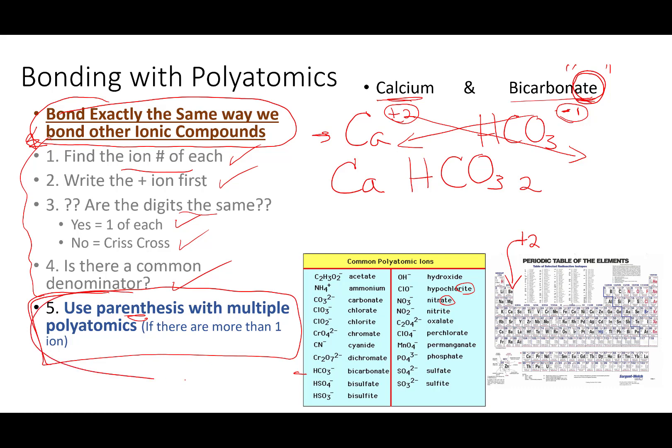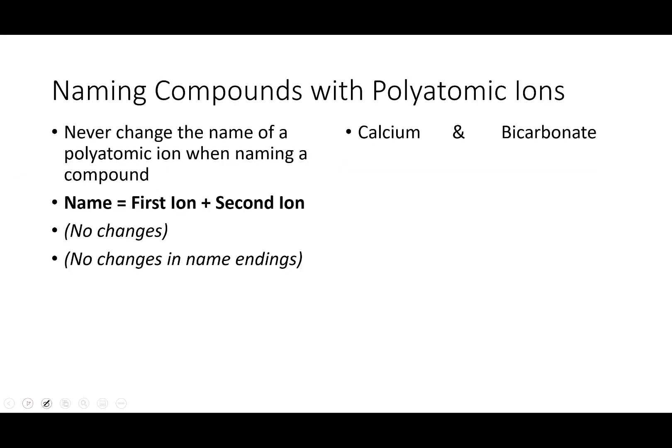Now, this is where we have to use this step. If you have multiple polyatomics, we have to put parentheses around the polyatomic ion, because this two means we have two bicarbonate ions, because look what it looks like otherwise. If we don't, it looks like you have 32 oxygen atoms, and that looks stupid, and you don't want that. You want two polyatomics, so that is our correct answer.